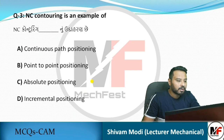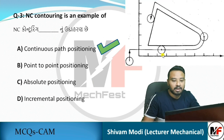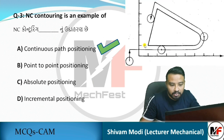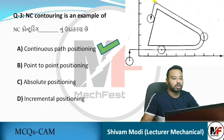The next question: NC contouring is an example of what? NC contouring is an example of continuous path positioning. As we can see in the figure, the tool is moving and machining the workpiece using a continuous path, so that is the example of NC contouring.